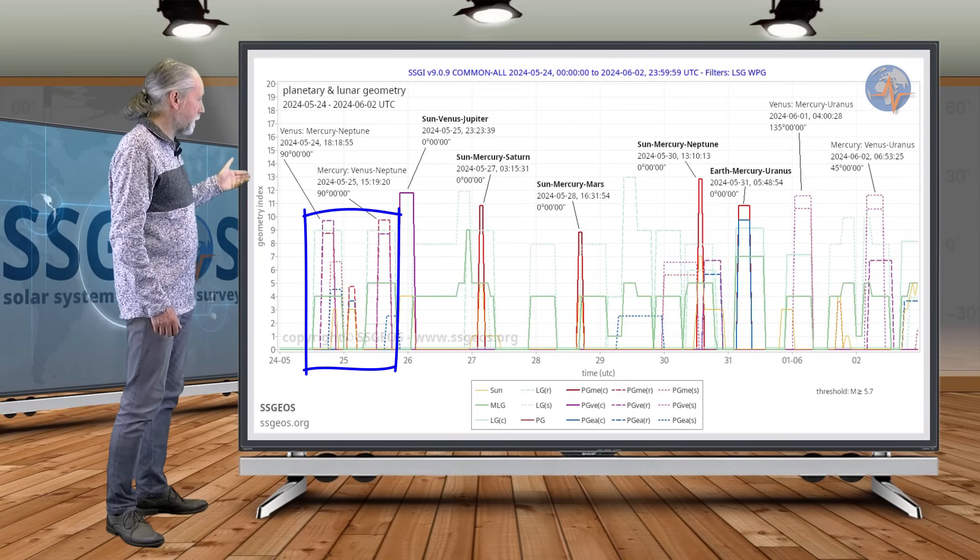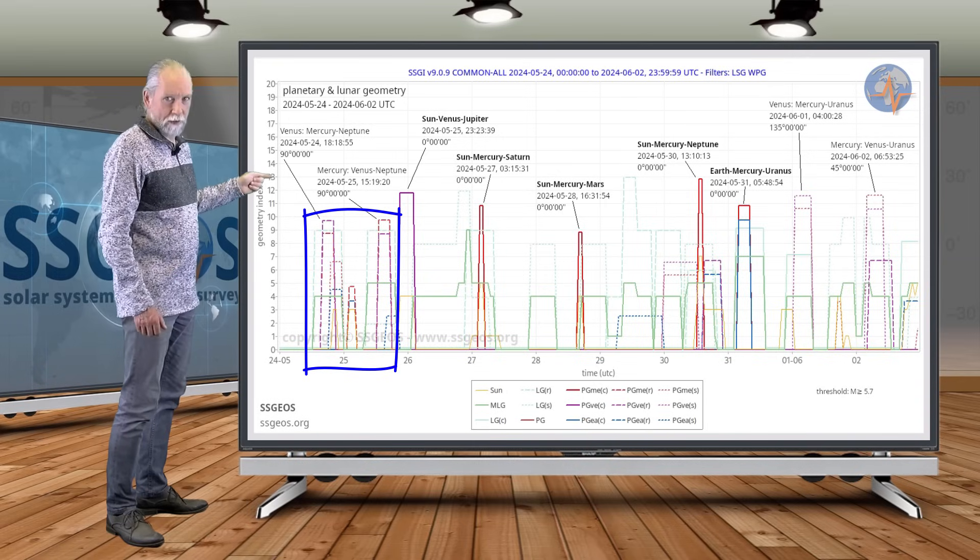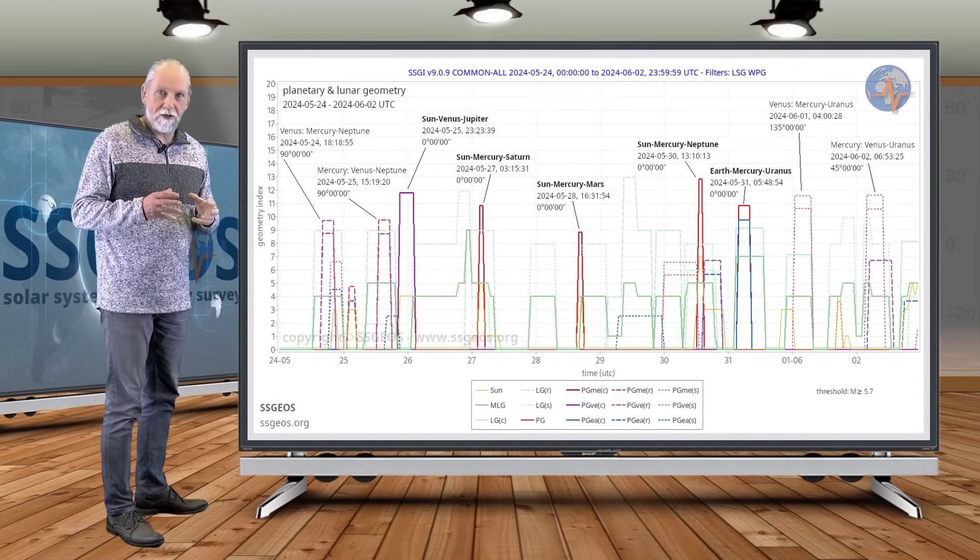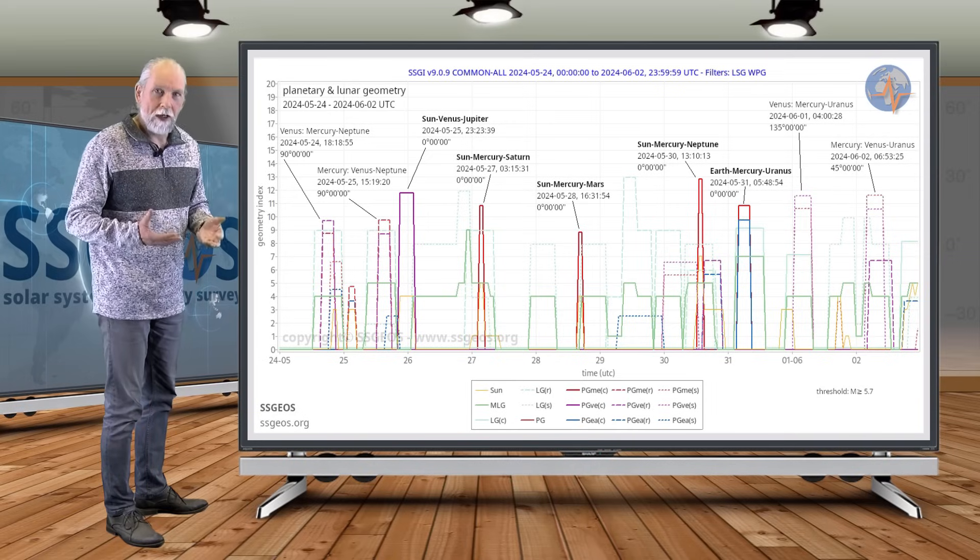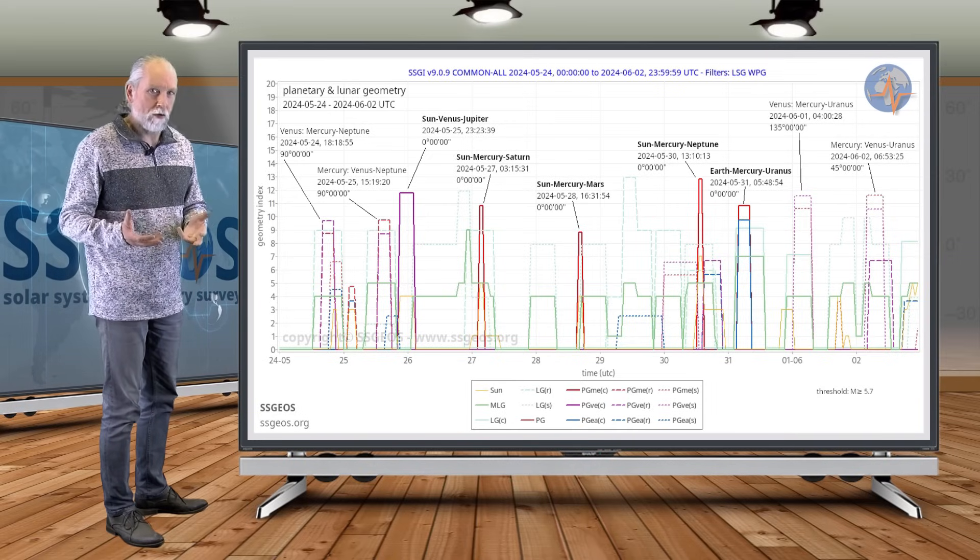So Venus-Mercury-Neptune happened yesterday night, and then tonight Mercury-Venus-Neptune. So first we have Venus, so that's from a Venus point of view, and then Mercury, from a Mercury point of view, the same right angle geometry.